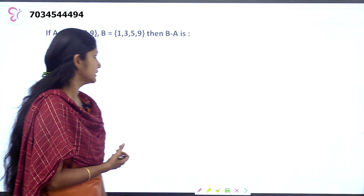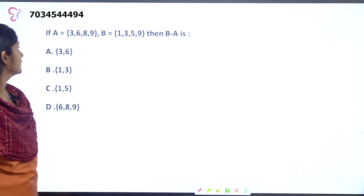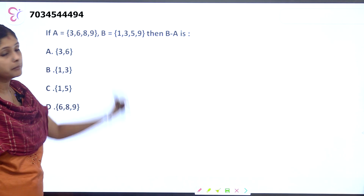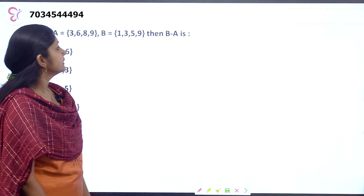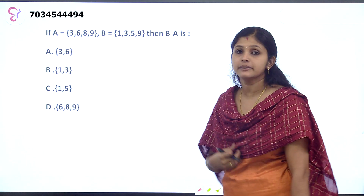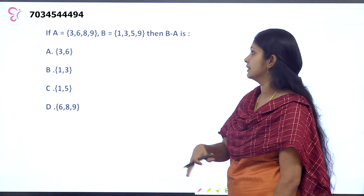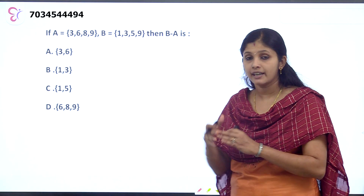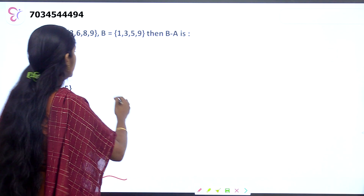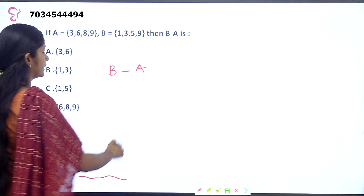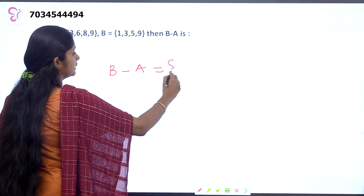So we'll discuss some of the previous year points. If A is equal to the set {3,6,8,9} and B is equal to {1,3,5,9}, we call B is a subset of A.